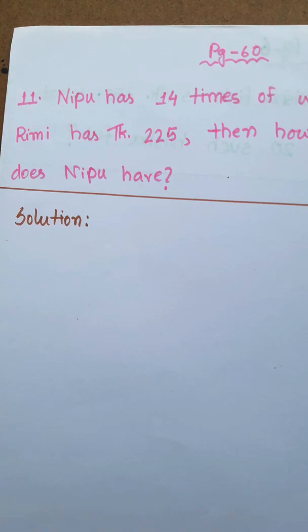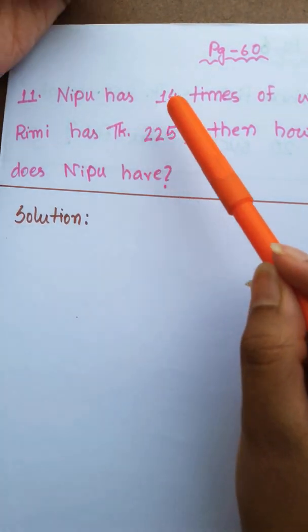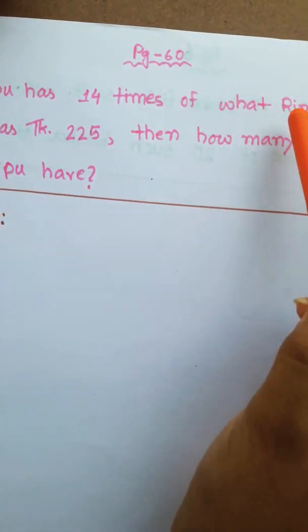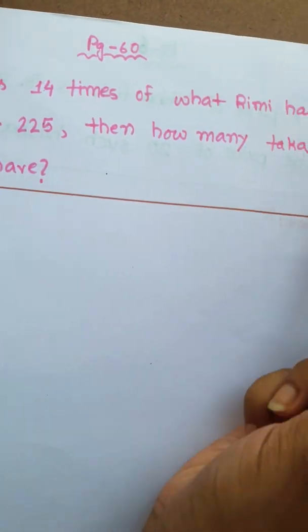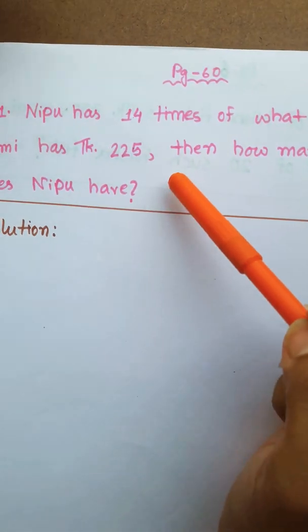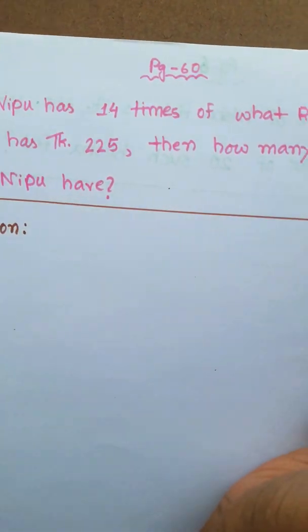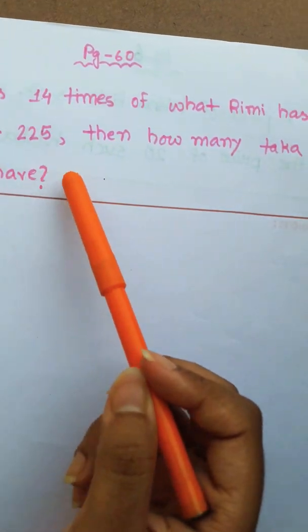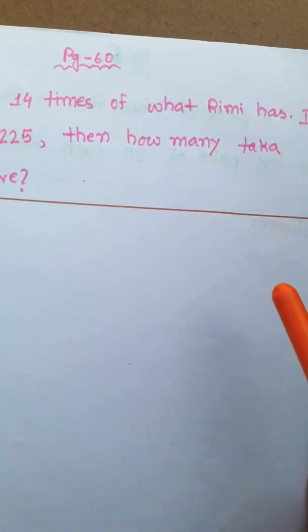Now the next math problem: Nipu has 14 times what Rimi has. If Rimi has 225 tucker, how many tucker does Nipu have?